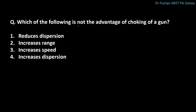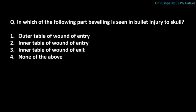Which of the following is not an advantage of choking of a gun? The correct answer is that it increases the dispersion — this is not an advantage. Choking means constriction of the terminal barrel in shotguns. In which part is bevelling seen in bullet injury to the skull? Bevelling is seen in the inner table of the wound of entry, or the outer table of the wound of exit.